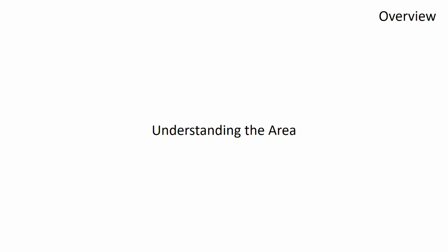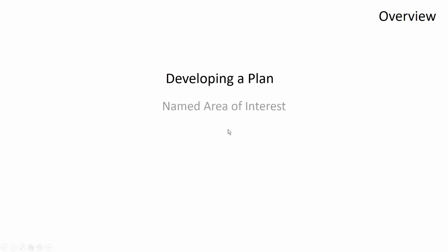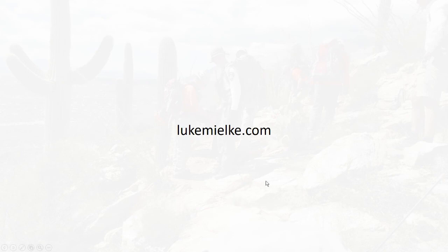In this lesson we covered understanding the area, understanding your equipment, developing a plan, introducing the named area of interest, and applying a search strategy to that named area of interest. This lesson was Unmanned Aerial Systems Mission Planning. For more information or additional resources, please check out LukeMilkey.com.